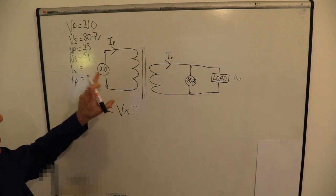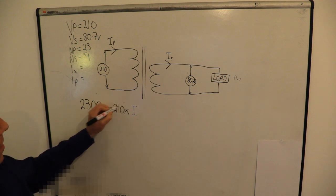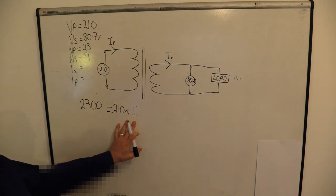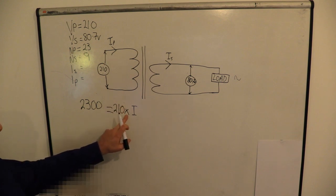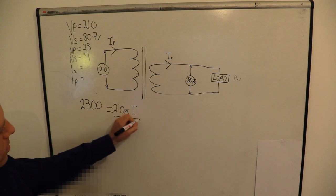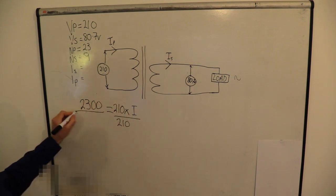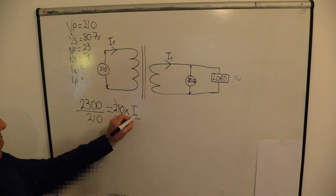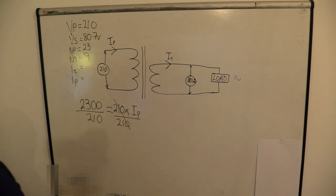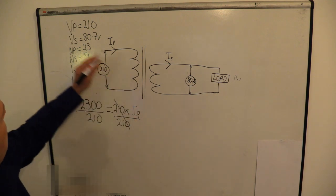If we tackle the primary side first - we put in our primary voltage of 210. We need to isolate current, so we get rid of the 210 by doing the opposite function and dividing by 210 on both sides, then we cancel. So primary current equals 2300 divided by 210, which gives us 10.95 amps.